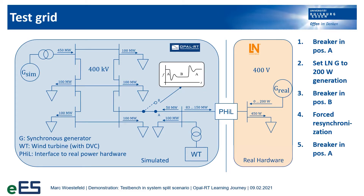The test grid consists of a simulated part with loads, transmission lines, and a wind turbine. The real power-hardware-in-the-loop test bench consists of a real synchronous machine and a resistive load. The wind turbine, which is simulated, is controlled by a grid-forming control structure named DVC. The real synchronous generator is set up as a constant power feeder with low inertia. At the beginning, we have a power flow of about 50 MW from our wind turbine to the other part of the simulated grid, in addition to about 450 W of ohmic load on our test bench. The ohmic load will be scaled up so that the simulated grid will see about 150 MW of load.